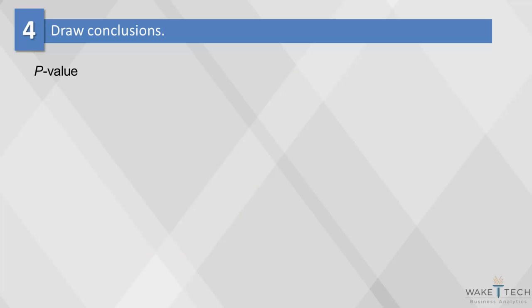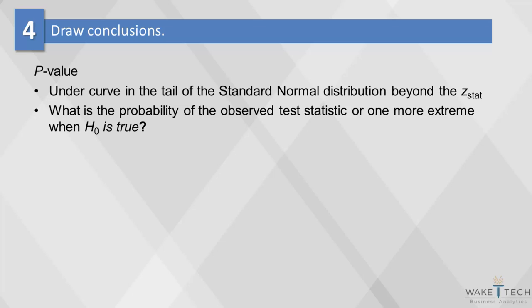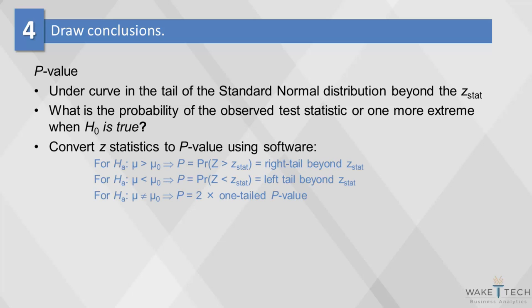The p-value is the area under the normal curve in the tails beyond the z-stat. It answers the question, what is the probability of the observed test statistic or one more extreme when H0 is true? To convert z-statistics to p-value, we will use software.